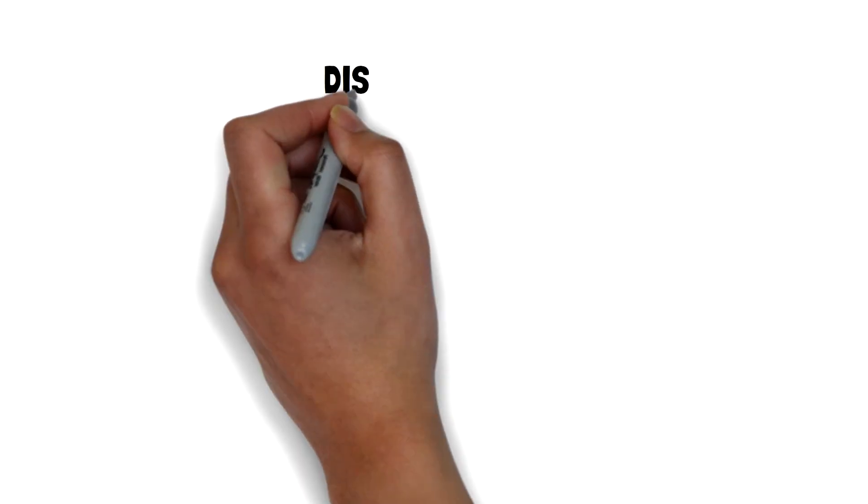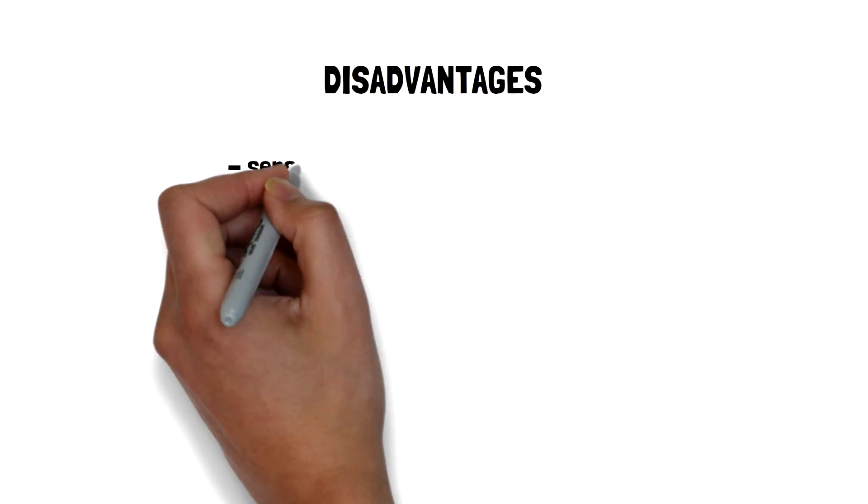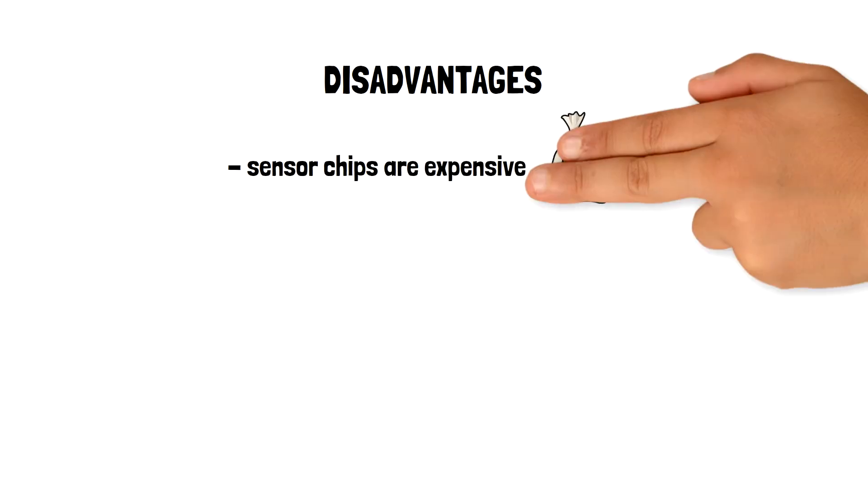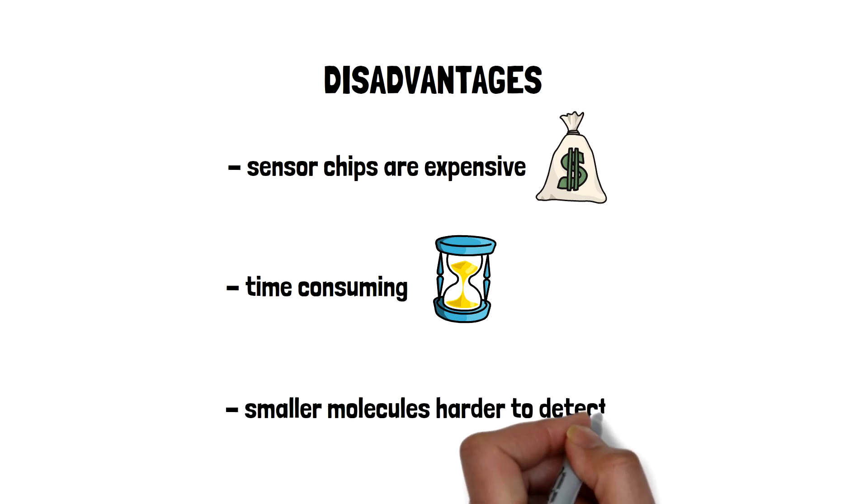Despite the hype of this technique, it does come with some downsides. The sensor chips used for the analysis are fairly expensive, and the ligand immobilization step can be the most time-consuming and tedious step. In addition, although it is mass-sensitive, binding of low molecular weight compounds becomes more of a challenge to detect.